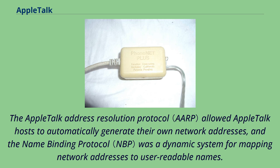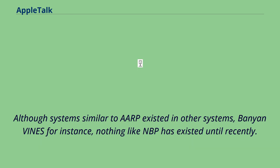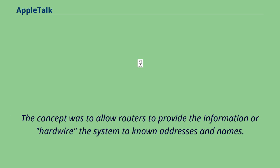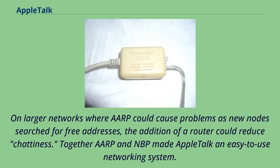Although systems similar to AARP existed in other systems — Banyan Vines, for instance — nothing like NBP had existed until recently. Both AARP and NBP had defined ways to allow controller devices to override the default mechanisms, allowing routers to provide information or hardwire the system to known addresses and names. On larger networks where AARP could cause problems as new nodes searched for free addresses, the addition of a router could reduce chattiness. Together, AARP and NBP made AppleTalk an easy-to-use networking system.